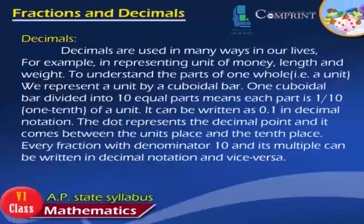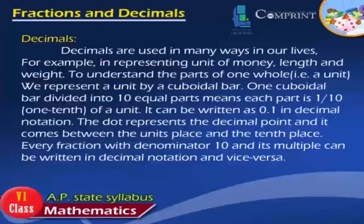Decimals are used in many ways in our lives, for example, in representing units of money, length, and weight. To understand the parts of one whole, we represent a unit by a cuboidal bar. One cuboidal bar divided into 10 equal parts means each part is 1 by 10th of a unit. It can be written as 0.1 in decimal notation. The dot represents the decimal point, which comes between the unit place and the tenths place. Every fraction with denominator 10 and its multiples can be written in decimal notation and vice versa.